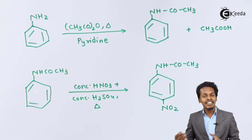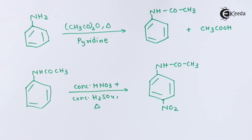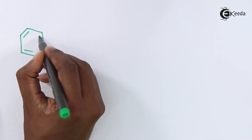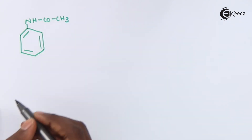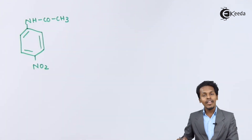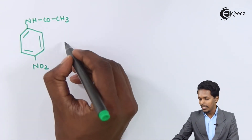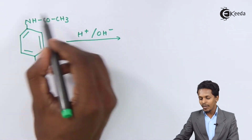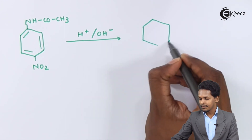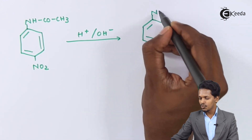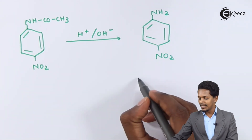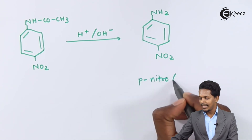From para-nitroacetanilide, we can easily prepare para-nitroaniline by performing a hydrolysis process. If we treat para-nitroacetanilide with HCl or a strong base, the acetamido group is converted back into the NH2 group. This is how we obtain a single product — para-nitroaniline.